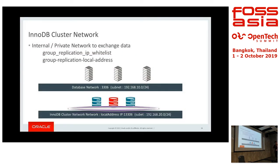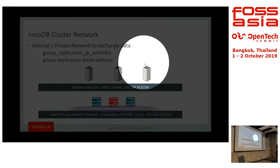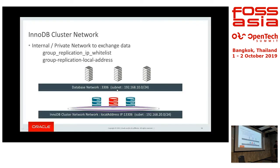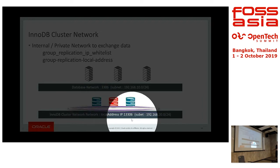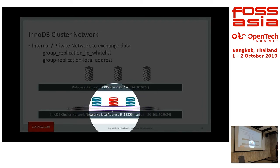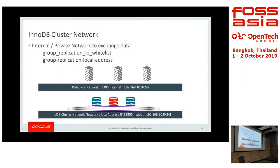Within the three servers, the application connects on port 3306 for example, but there is an underlying internal network for data exchange. We don't want to expose this data exchange on the external network. So we need to define what this internal network is — that's what we call local address and the IP whitelist subnet — to tell the cluster which network it talks to for interconnect.